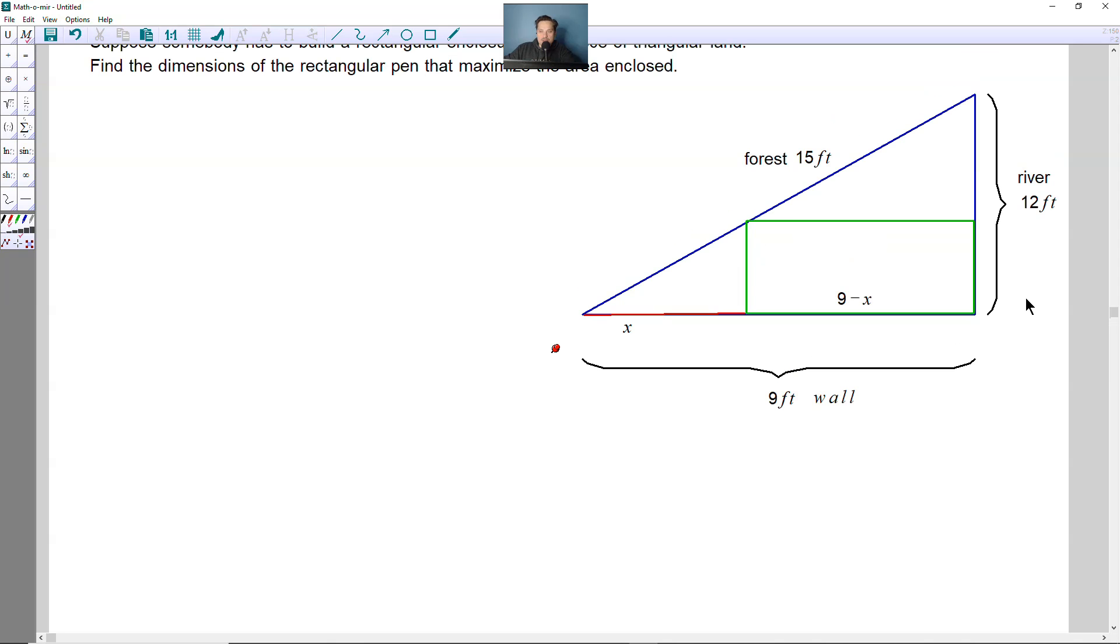Now look at the vertical dimension there. Since the whole river is 12 feet, then you can describe this vertical side of the right side of the rectangle as basically 12-y, where y tells you the height of the rectangle.